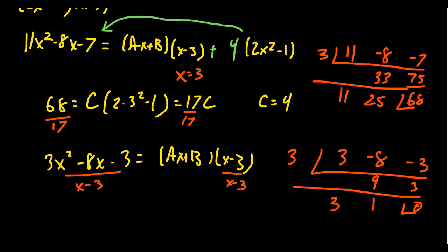In which case, then the left-hand side actually simplifies to be 3x plus 1 equals ax plus b. So without any plugging whatsoever, we see that a is going to equal 3 and b has to equal 1.